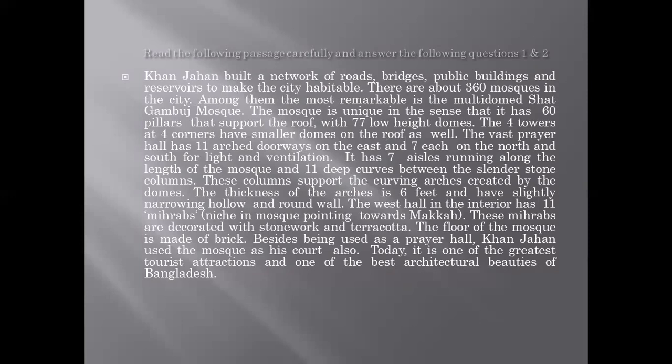Khan Jahan built a network of roads, bridges, public buildings, and reservoirs to make the city habitable. The city was not habitable earlier, and it was Khan Jahan who built all of these just to make the area livable. There are about 360 mosques in the city, and among them the most remarkable one is the multi-domed Shat Gumbaz Mosque.